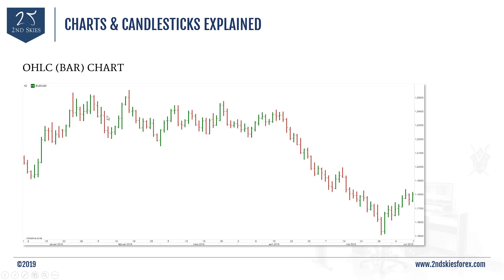This chart is especially good for aftermarket analysis of historical data. The vertical line in the middle represents the entire price movement during that day. To the left you have the horizontal tick showing the opening price of that particular day, and to the right is the closing price. Price opened at the left tick, moved within the price range during the day, and then closed at the right tick.